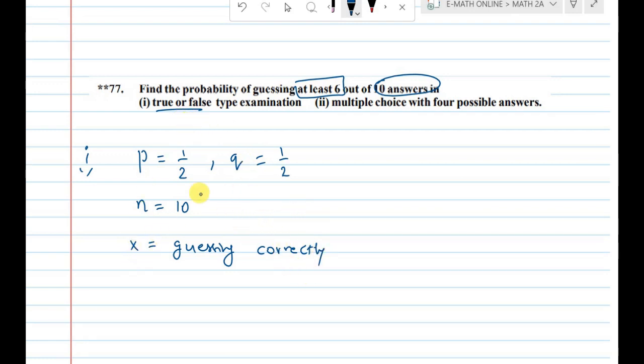True or false type with at least 6. At least means 6 is there, highest value is 10.